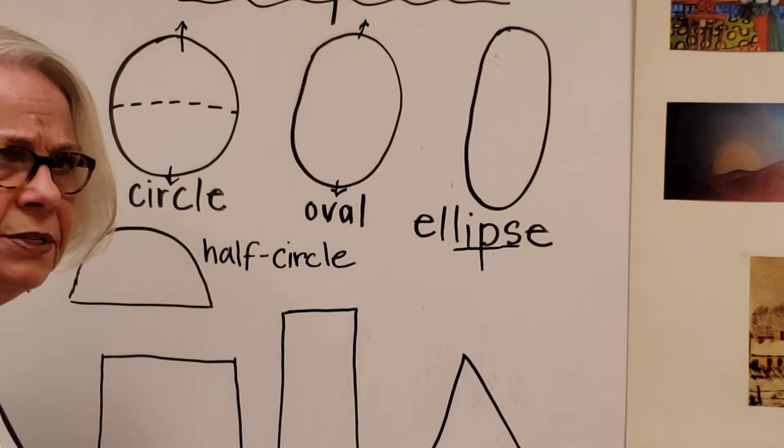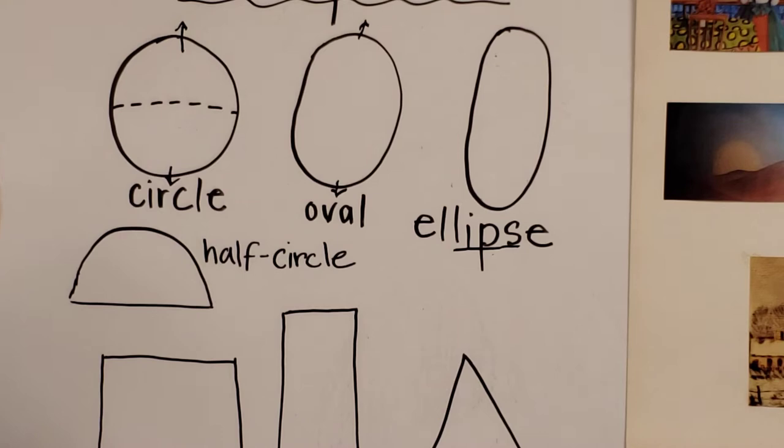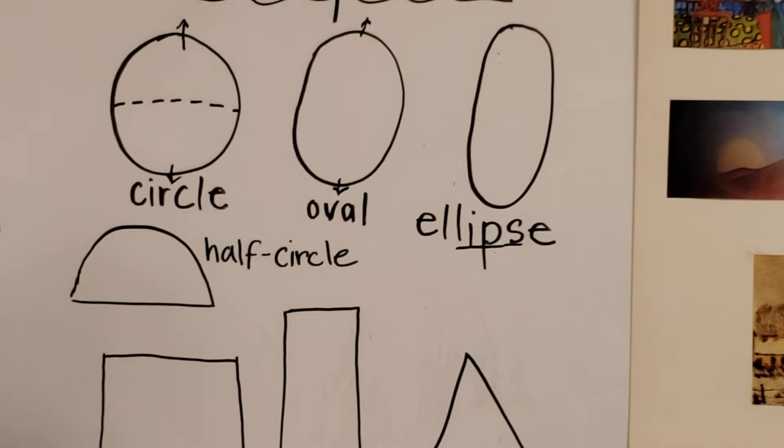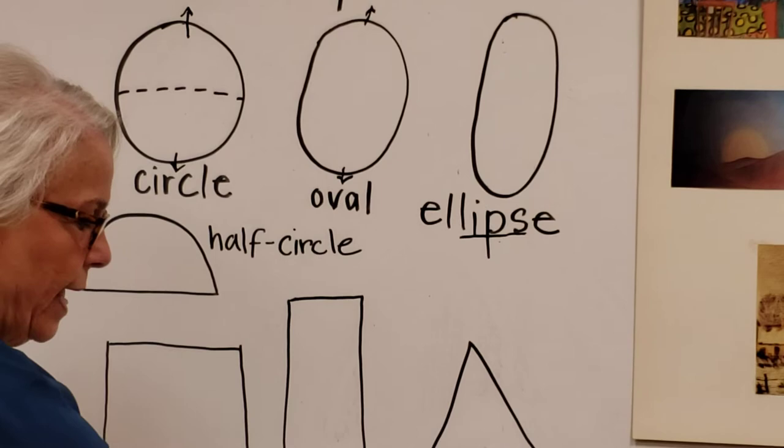Boy, do we use these round shapes a lot when we create art. Now I also want to talk to you about some shapes that have corners. When you look at words like rectangle and triangle, the 'angle' part means corners.